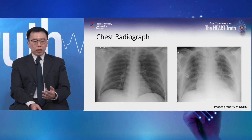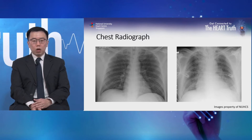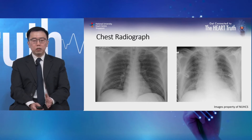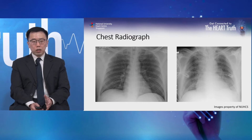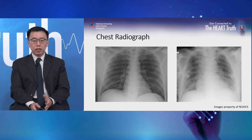An x-ray is often used to diagnose heart failure. On the left is a normal x-ray with black colored lung fields and a heart that is not too enlarged. Comparing to the x-ray on the right, the heart looks bigger, the lung fields are not nice and black, and there are patchy white areas in the lungs — those are signs of water retention. That is a typical x-ray of a patient with heart failure.